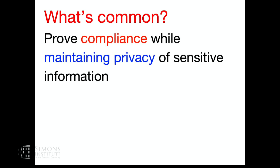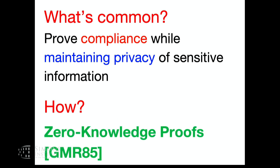So here are two motivating examples—there are many applications of zero-knowledge, I just picked two. What's common between them? In general, you want a mechanism that allows you to prove some form of compliance, or a predicate, on sensitive information while keeping the sensitive information private. We know what predicate we want to prove, but there is sensitive information going into it that we want to hide, yet still convince that this sensitive information is compliant. The tool we want is zero-knowledge proofs, introduced by Goldwasser, Micali, and Rackoff in 1985.